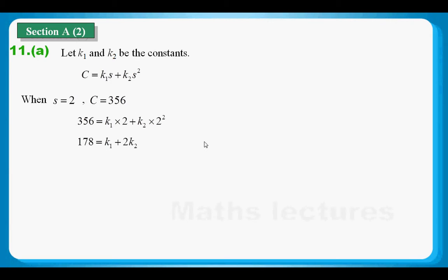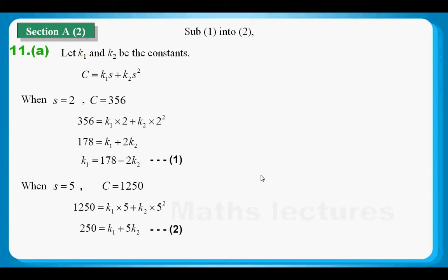Because I know that I'm going to do a simultaneous equation, two sets of values will generate two equations. So I will make k1 to be the subject of the first equation. And then I do another term of substitution. I have equation 2, and by simple substitution, I will have k2 equals 24. Substitute back into equation 1, I will have k1 equals 130.